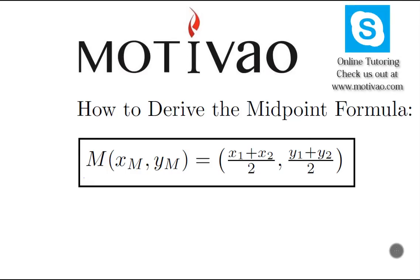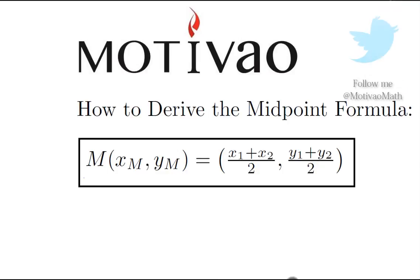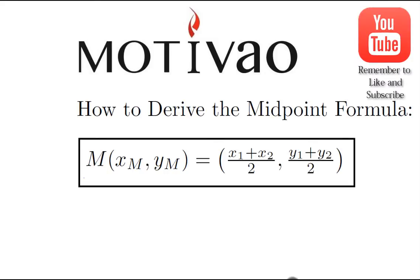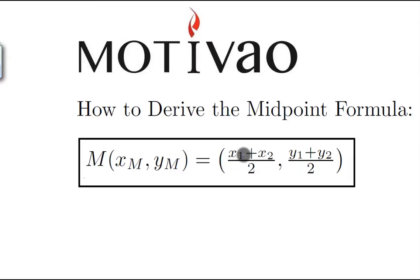How's it going guys? This is Joshua from Motiva Online Instructors. Today we're going to find the midpoint formula, which looks like this: the midpoint of two points equals x1 plus x2 divided by 2, comma, y1 plus y2 divided by 2. And I'm going to be explaining in detail what this means.